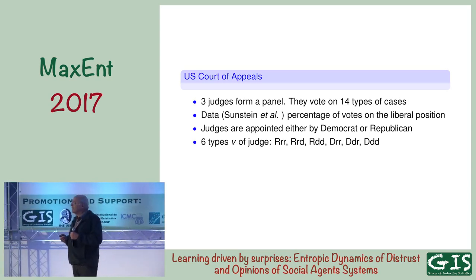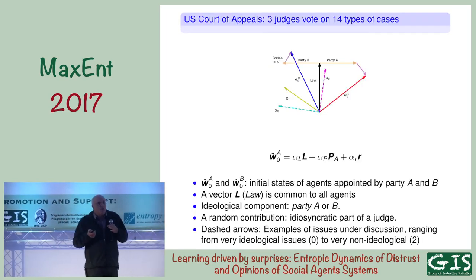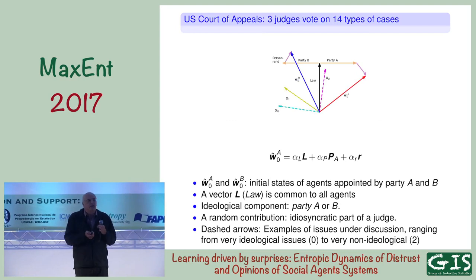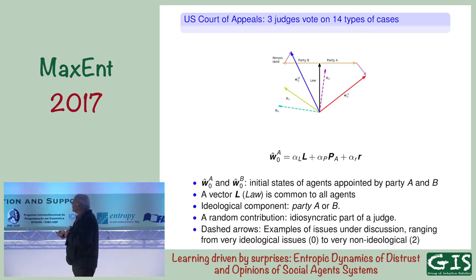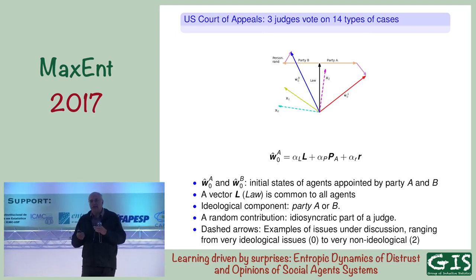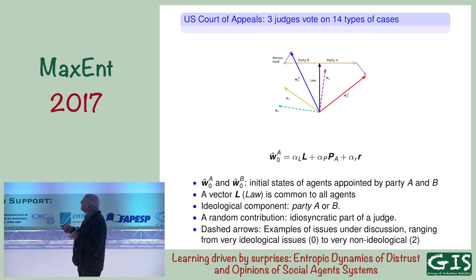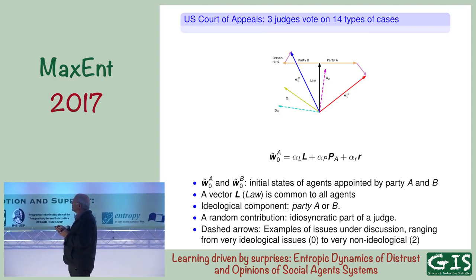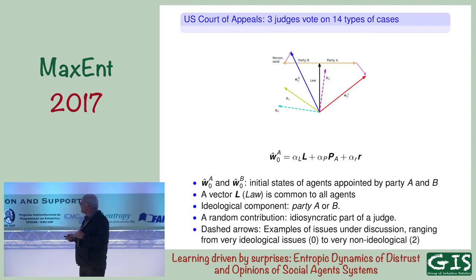The model I have for the judges is the following. I'm going to look at a society of three perceptrons, and I'm going to put initial conditions on the weights. The initial condition on the weights is made up of three contributions: one is L, common to every judge — we suppose they went to law school and learned the law, they have common knowledge; then there is a contribution for those judges appointed by party A — the same for all Republicans or all Democrats; and then there is a random part to describe that people are different.